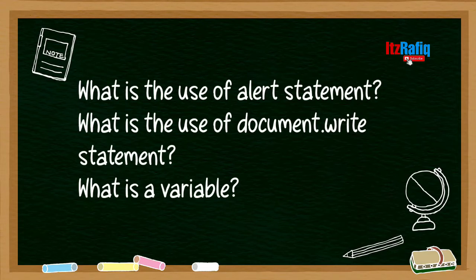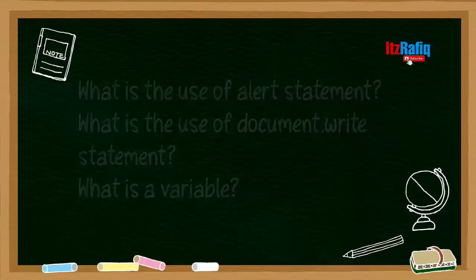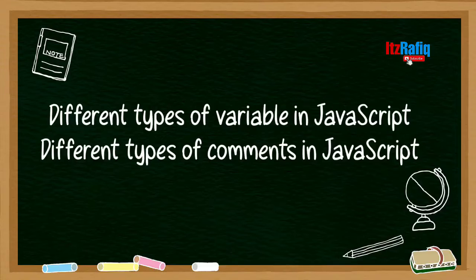What is the use of document.write statement? It is used to write text on the document. Then what is variable? A variable is a storage area where we can store values. And different types of data available in JavaScript - number, string, and boolean. Different types of comments - single line comment and multi line comment.